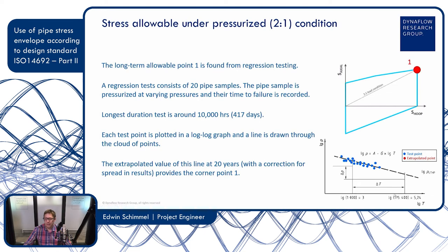If we extrapolate this regression line all the way to 175,400 hours — which corresponds to 20 years — and read the pressure at that time-to-failure, we have the allowable pressure for 20 years design life. We can then convert it using the Barlow formulas, also called Kettle formulas, to find the allowable stresses: the hoop stress and the axial stress. That results in the first point of our stress envelope — the pressure at which the pipe will fail after 20 years design life.